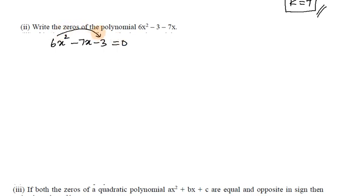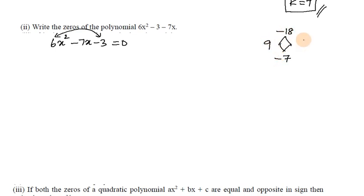To find the zeros, factorize 6x² - 7x - 3. Multiply 6 × 3 = 18, and find two numbers that multiply to 18 and add to -7. Those numbers are -9 and 2: 9 × 2 = 18, and -9 + 2 = -7.